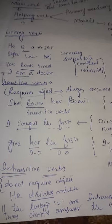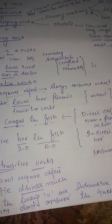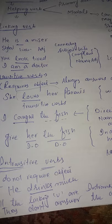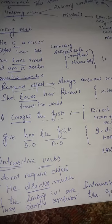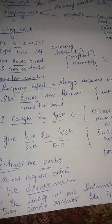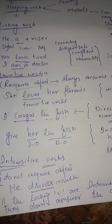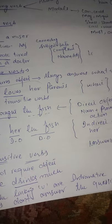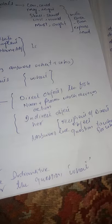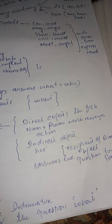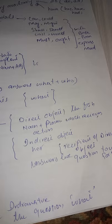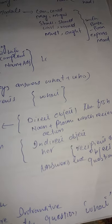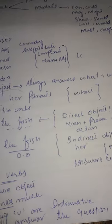Transitive verbs can have a direct object and an indirect object. For example: 'I caught the fish.' Here 'caught' is a transitive verb — I caught what? The fish. 'The fish' is the direct object. A direct object is a noun or pronoun which receives the action of the verb.